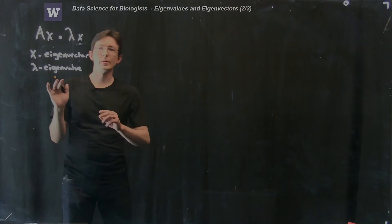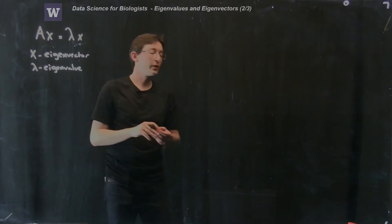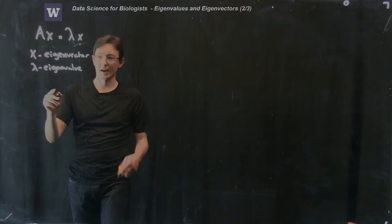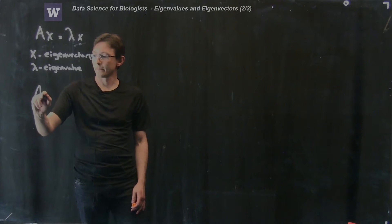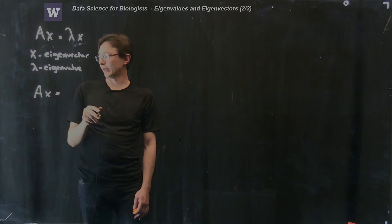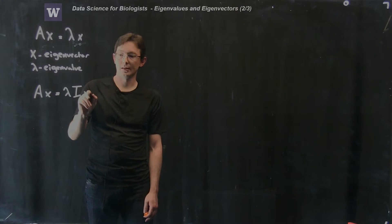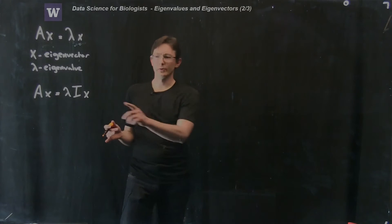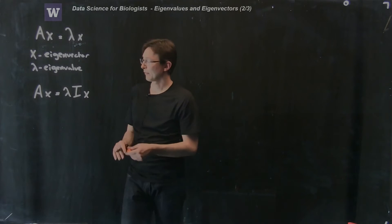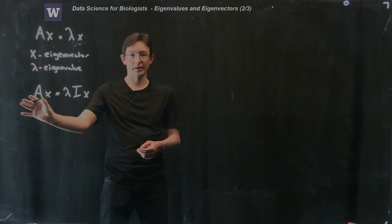The first thing we do is recognize that the vector lambda times x can be rewritten as lambda times the identity matrix times x. So A times x equals lambda x is really the same as lambda times the identity matrix times x. Because if I take the identity times x, I just get x back — it's the same as writing lambda x. Then I'm going to move this whole expression over to the left-hand side.